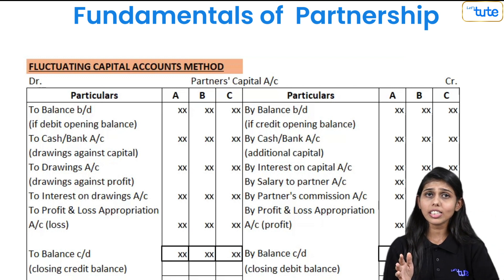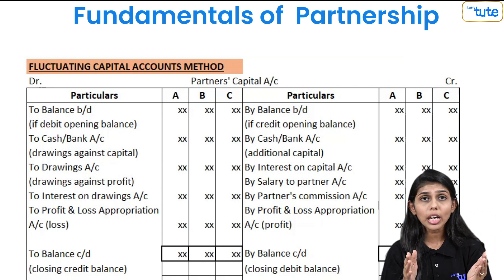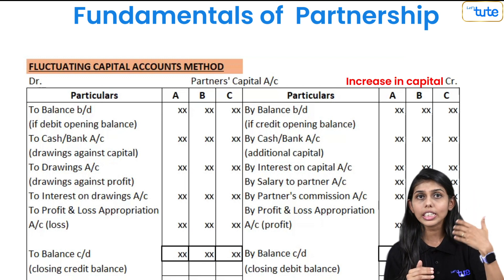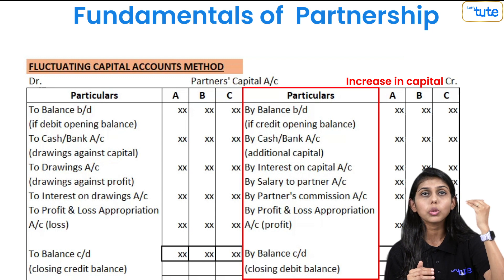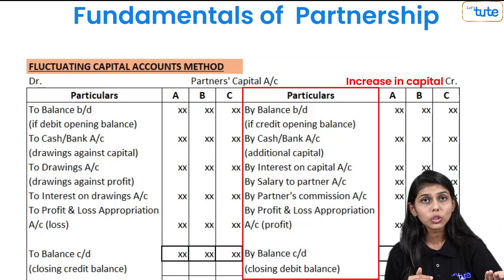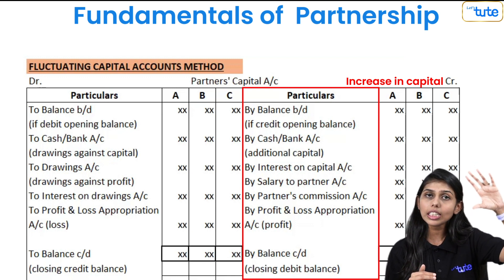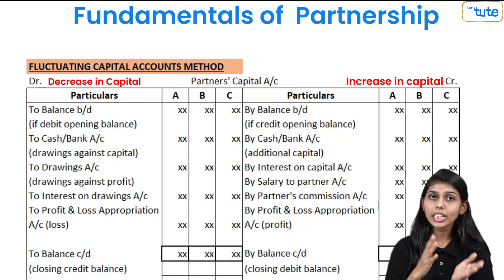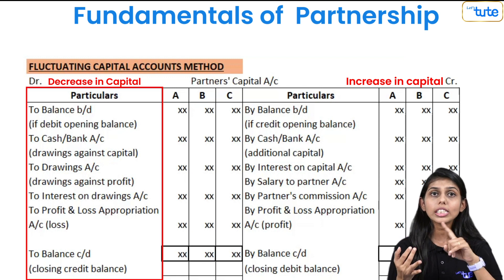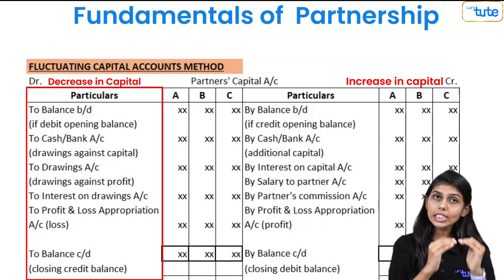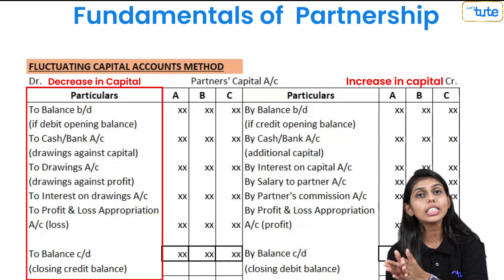In the capital account, if the capital balance increases it is credited — so opening capital, additional capital, interest on capital, salary or commission given to the partner, and share of profit all increase the capital balance and are credited. If the capital balance decreases, it is debited — so drawings, interest on drawings, and losses decrease the capital balance and are debited.